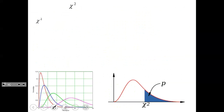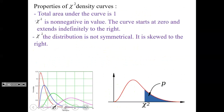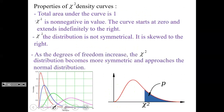Let's talk about the chi-square distribution. There are properties for the chi-square density curves. Like the normal curve and t-tables, the total area under the curve is one. However, chi-square is always non-negative — the curve starts at zero and extends to the right. The different drawings represent different degrees of freedom. The distribution is not symmetrical; it is skewed to the right. But as the degrees of freedom increase, the chi-square distribution becomes more symmetric and approaches a normal distribution.